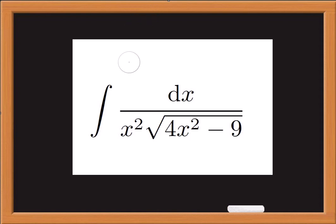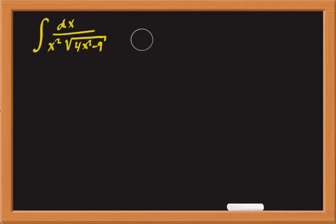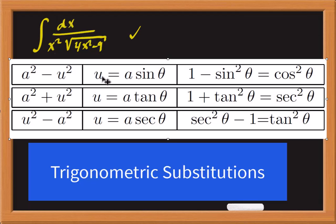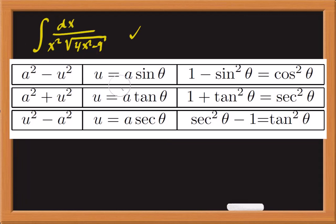We are going to use trigonometric substitutions and then hyperbolic substitutions. Here is the table of the trigonometric substitutions. We have a format of u squared minus a squared in the denominator, so we are going to use a substitution of u equal to a times secant of theta. That will help us use the identity: secant squared theta minus 1 equals tangent squared theta.